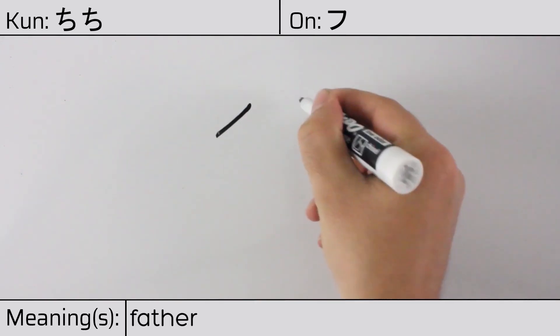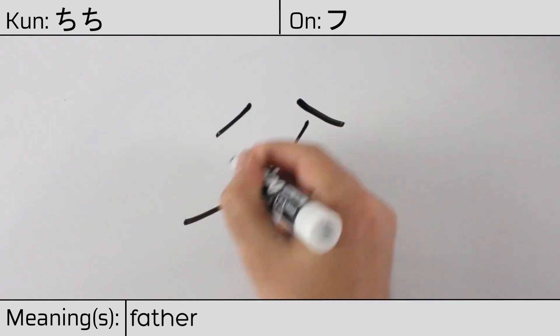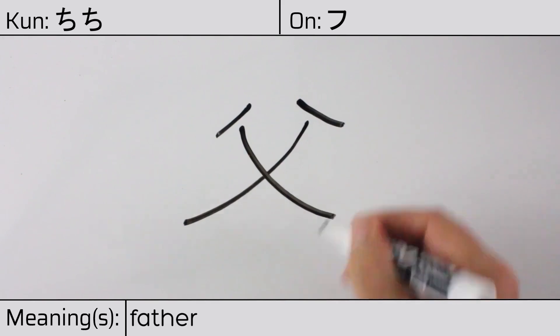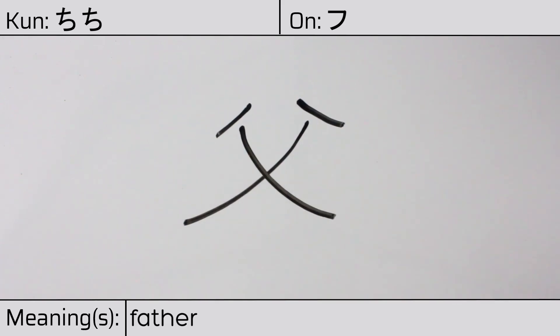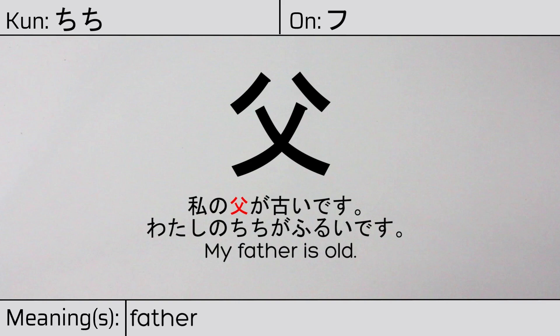This character is made up of the following radicals or parts: two dots, followed by a cross radical. Our example sentence is: Watashi no chichi ga furui desu — My father is old.